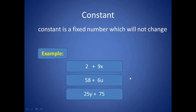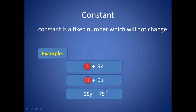Constant — a constant is a fixed number which will not change. For example, in this expression, 2 is a constant. And in this expression, 58 is a constant. And in this expression, 75 is a constant.